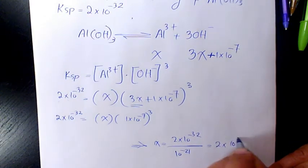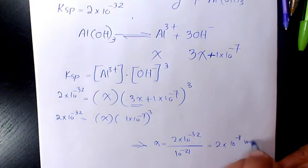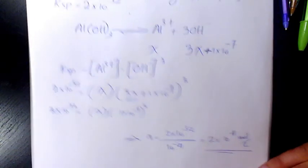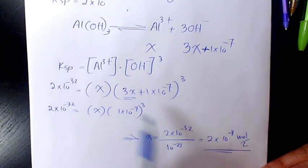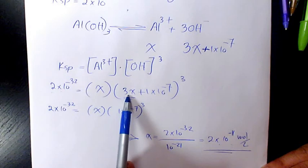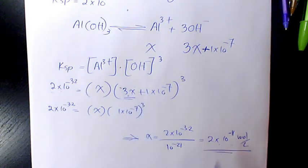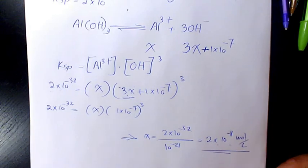And then as you see here, it means that that was a good assumption that we neglected 3x comparing to 1 times 10 to the power of negative 7. So 2 times 10 to the power of negative 11 mole per liter is the molar solubility of this compound.